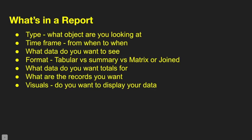The first thing we're talking about is a report. When you build a report out, you have to identify a couple of things: the type — so what object or objects are you looking at; the timeframe — from when and where do you want to look at these records; what data you want to see — the actual data points to capture; the format — tabular, summary, matrix, or joined; what data you want totals for; what records you want by adding filters; and visuals — not a requirement, but always helpful to have a visual representation.